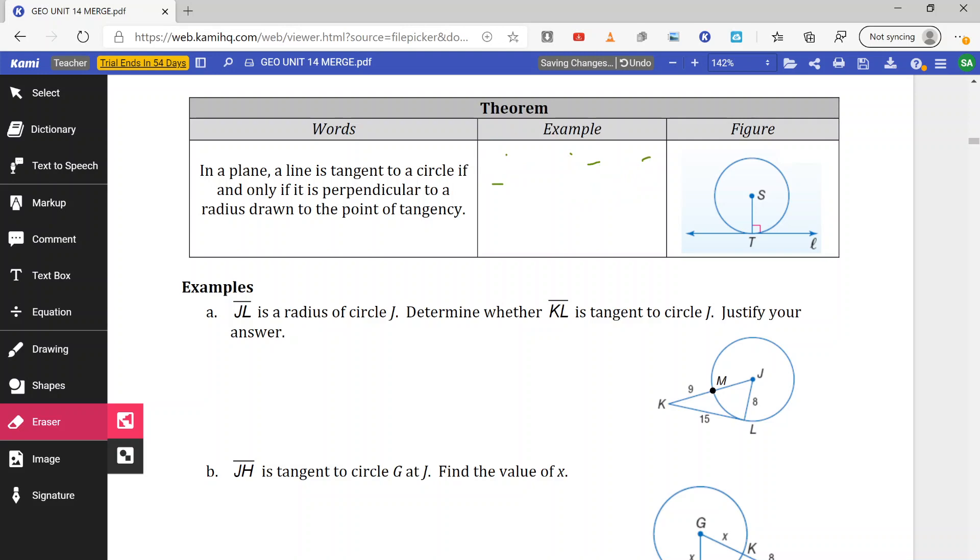So line L is tangent to circle S due to S-T being perpendicular to line L. Therefore, line L is tangent.